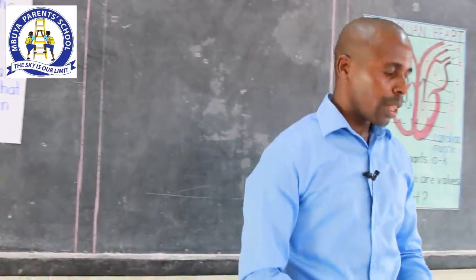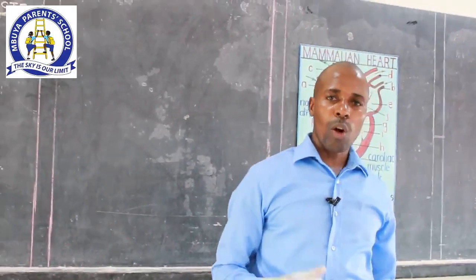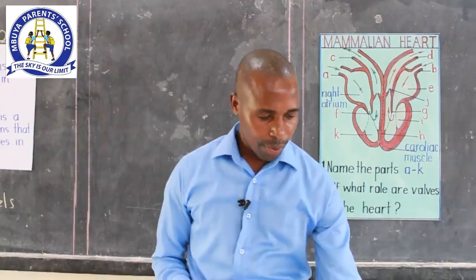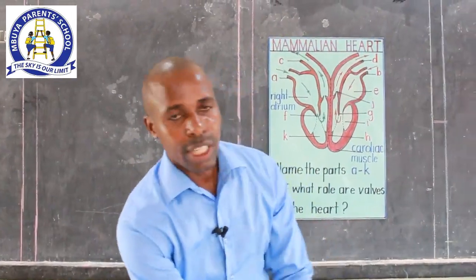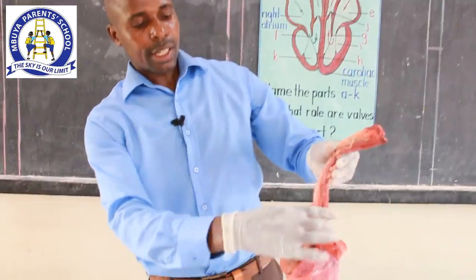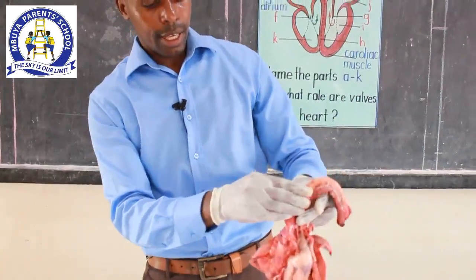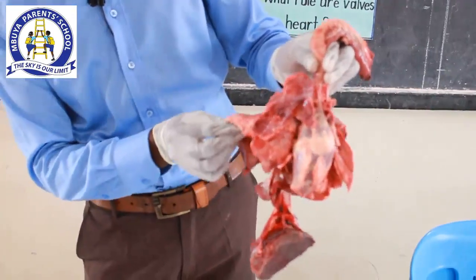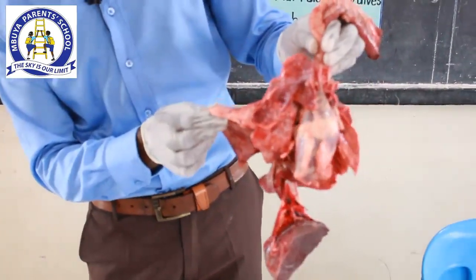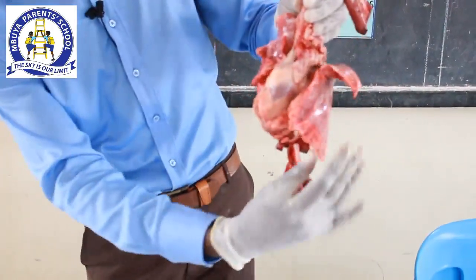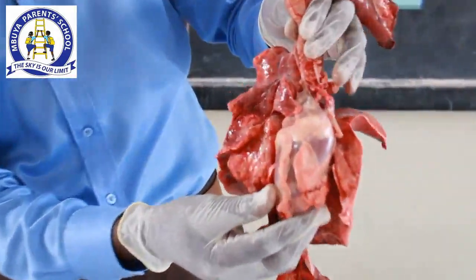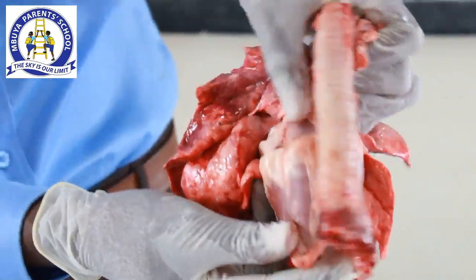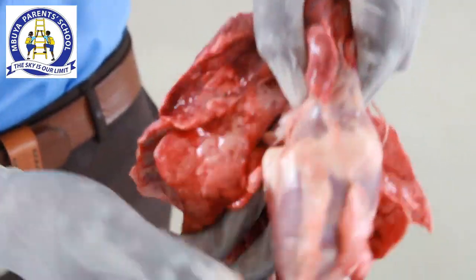The heart is a muscular organ that pumps blood in the body. The heart is found in the chest cavity. In the chest cavity, the heart is not the only organ — we also have the lungs. Our heart is covered in a tough membrane called the pericardium.